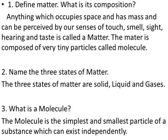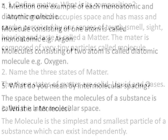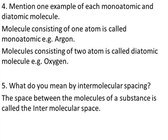Number four: Mention one example each of monoatomic and diatomic molecule. Monoatomic means having only one atom, and diatomic means having two atoms. A molecule consisting of one atom is called monoatomic, example argon. An example of diatomic is oxygen.